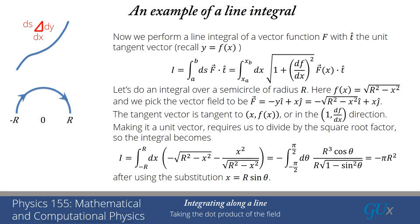The key thing to remember is that the line integral is essentially the same as doing the arc length, except there's an extra term in the integrand. While that extra term may look difficult because it involves vectors and dot products, in the end it just becomes a scalar function of the coordinate you're integrating over. You have to carefully take your time, work out what each of the vectors are, take the dot product, and then it just becomes a normal integral to evaluate.